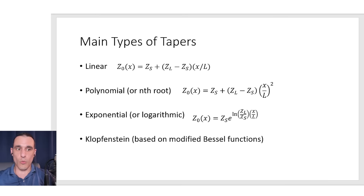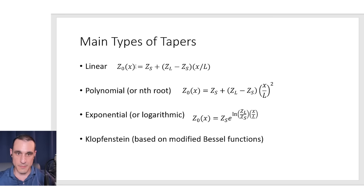Now, what are the main types of tapers? The most common type is a linear taper. The word 'linear' does not actually refer to the shape of the taper itself — it refers to the function describing the impedance along the taper. So it's a linear function, and if you graphed this function you would get a straight line. There are other types: you could have a polynomial taper with a power of two, or an exponential taper with an exponential function.